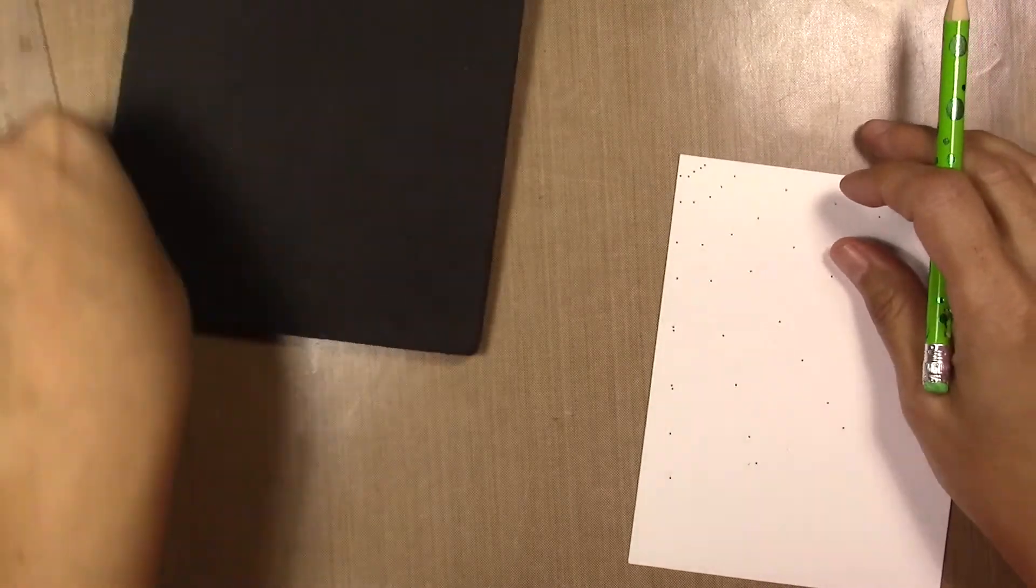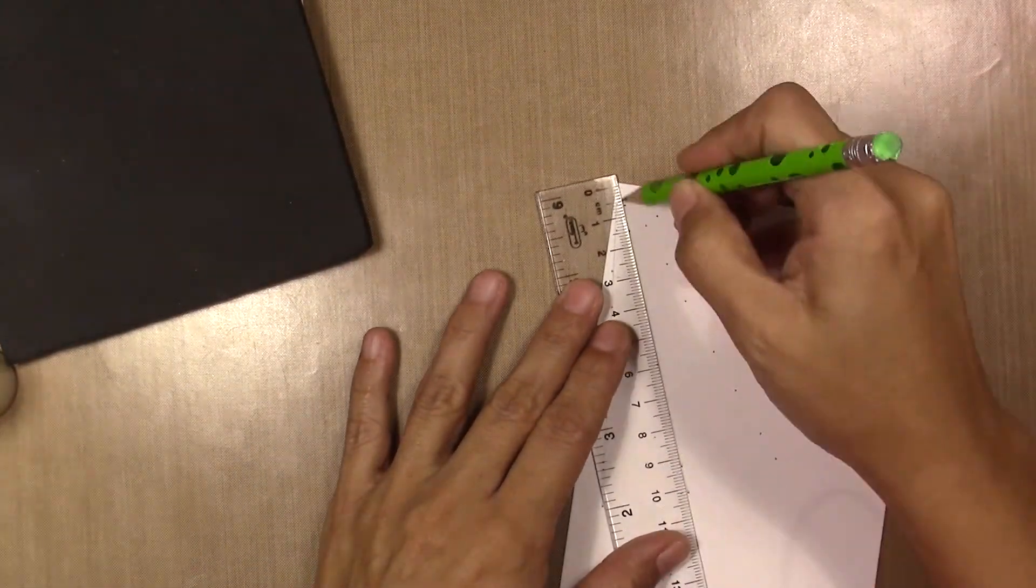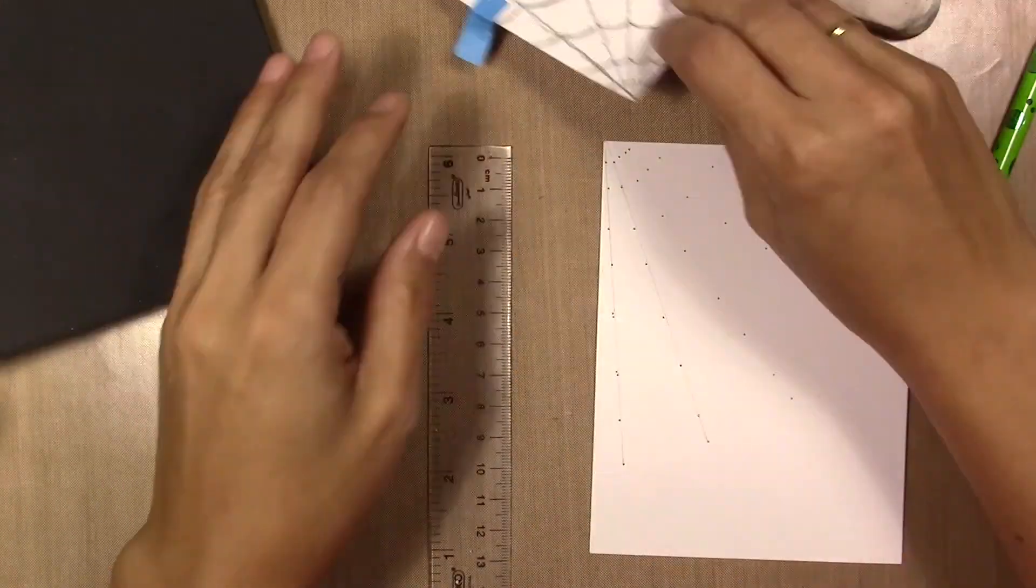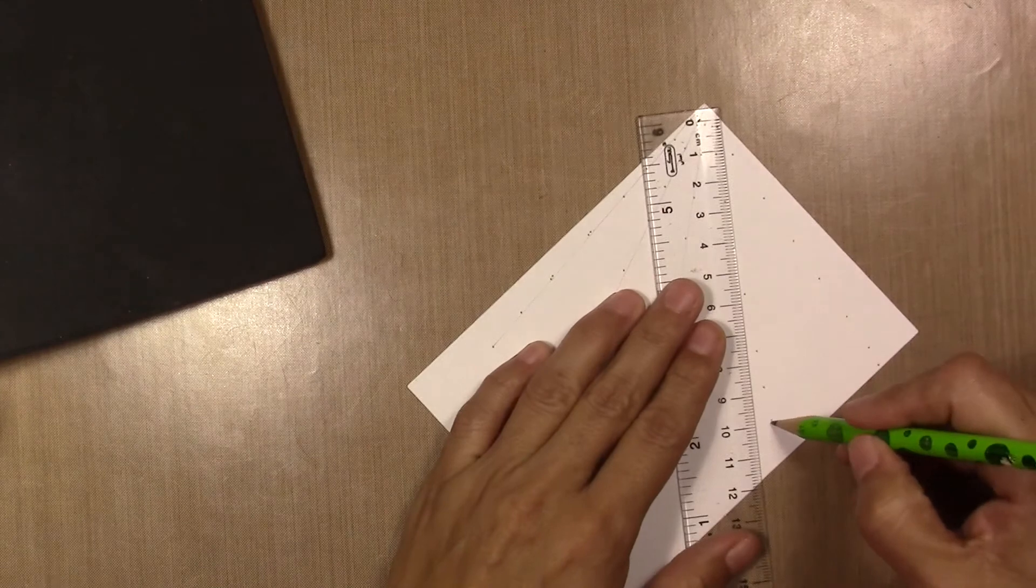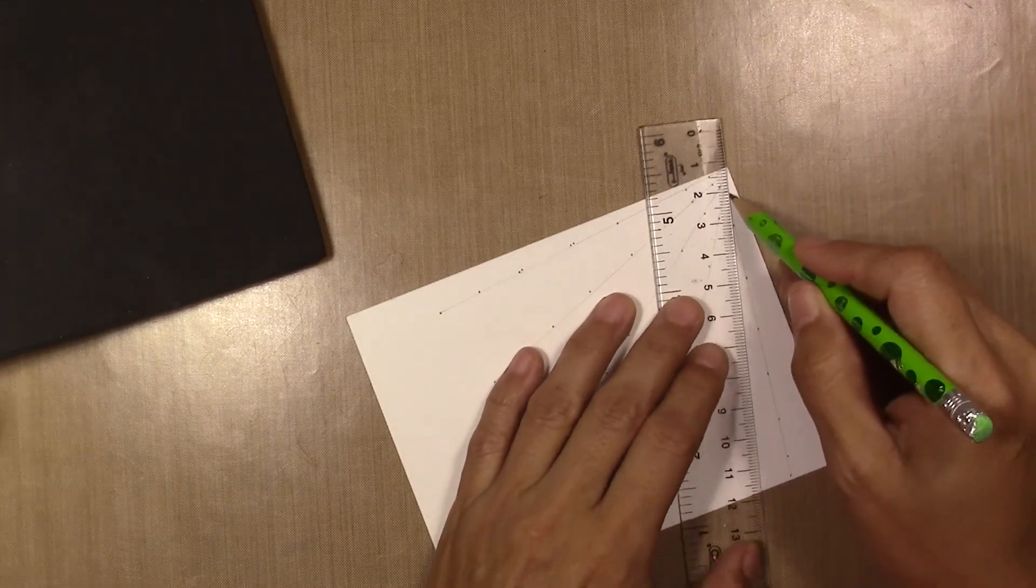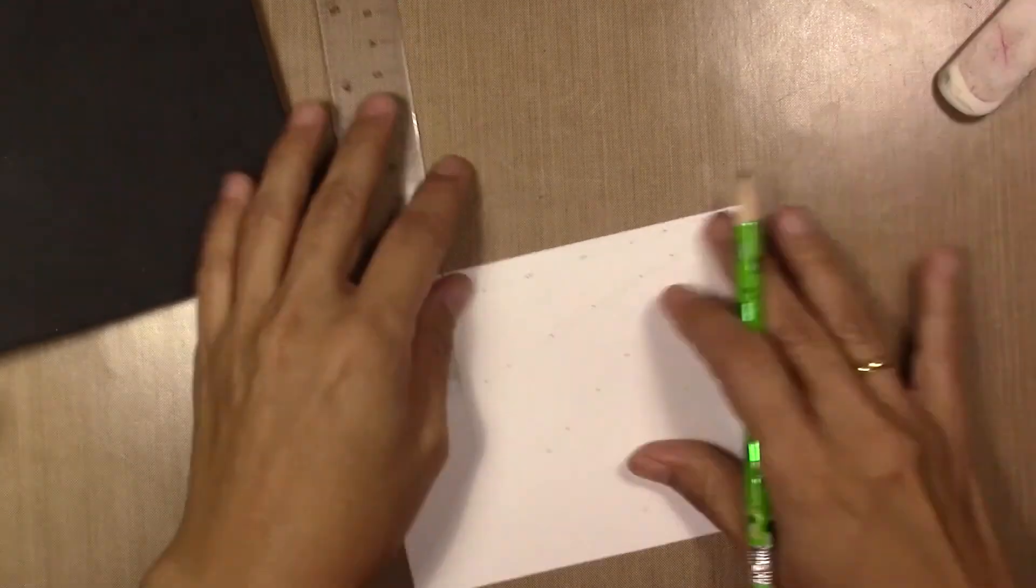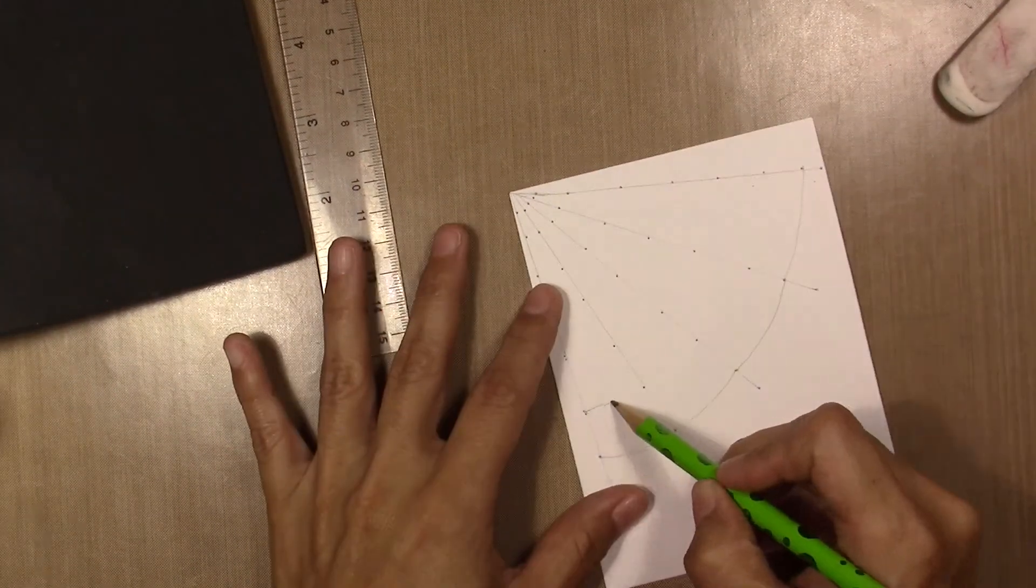If you want longer stitches you make the holes a little bit spaced, but I'm going to make the holes all very close together. I would say every two-eighths of an inch.